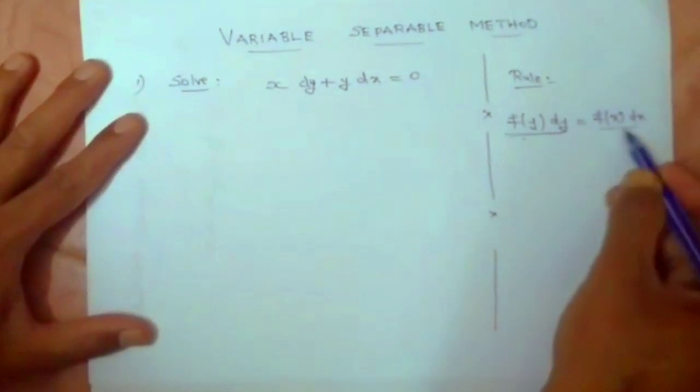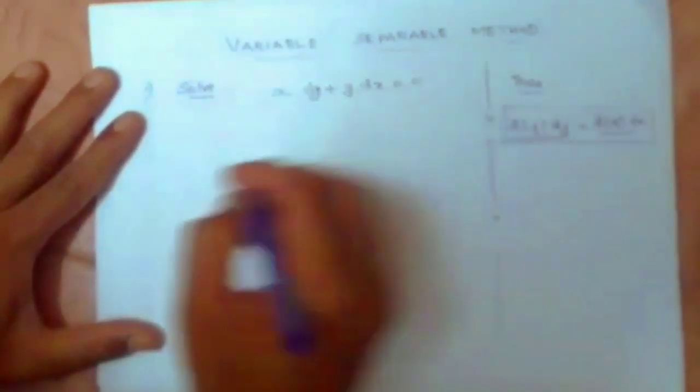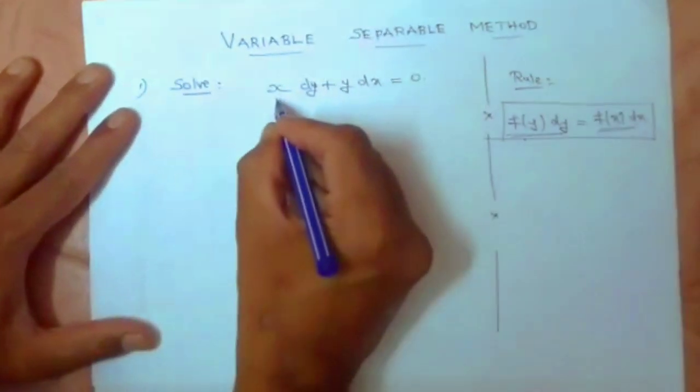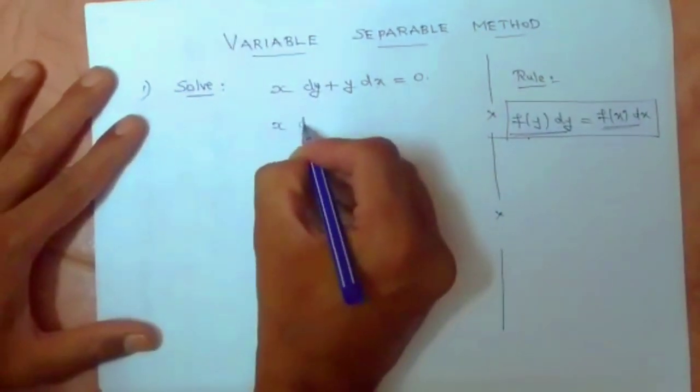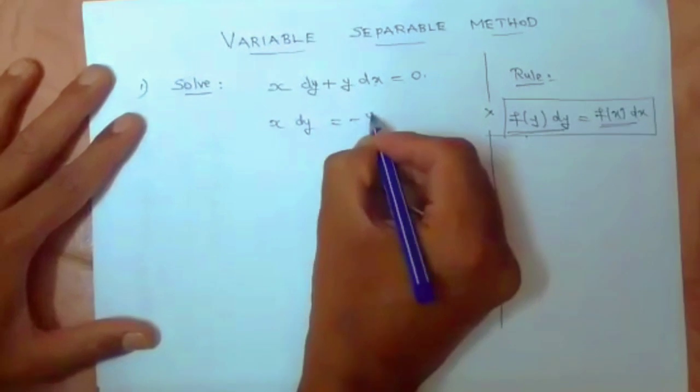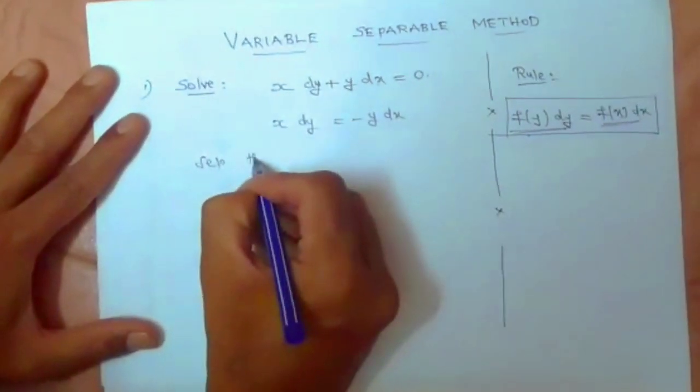Now the given differential equation is x dy plus y dx equal to zero. So I am going to write this as x dy equal to minus y dx. Now separate the variables, y in one side, x in the other side.